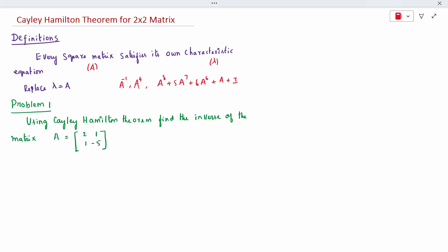So in this first, I will go with one small problem for 2 cross 2, how we have to do the Cayley-Hamilton theorem, then I will go with 3 cross 3. The problem 1 is using Cayley-Hamilton theorem, find the inverse of the matrix A equal to something.